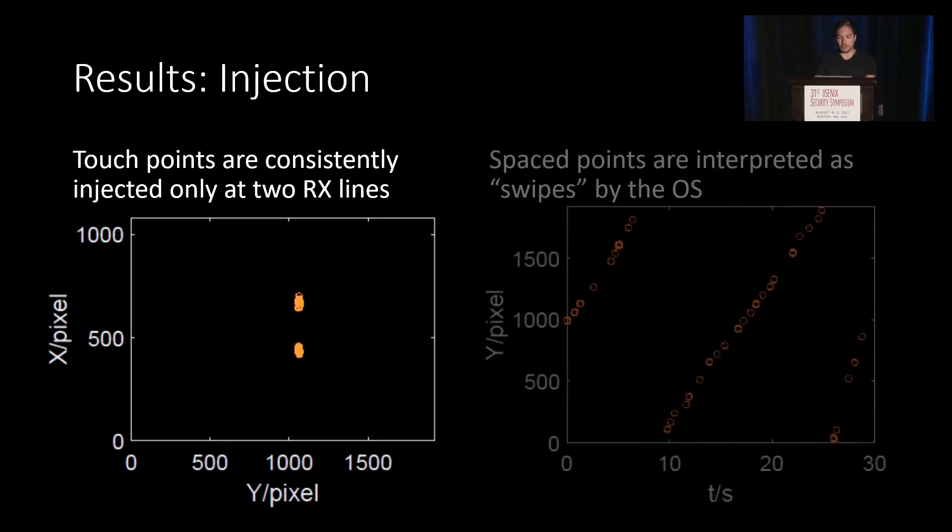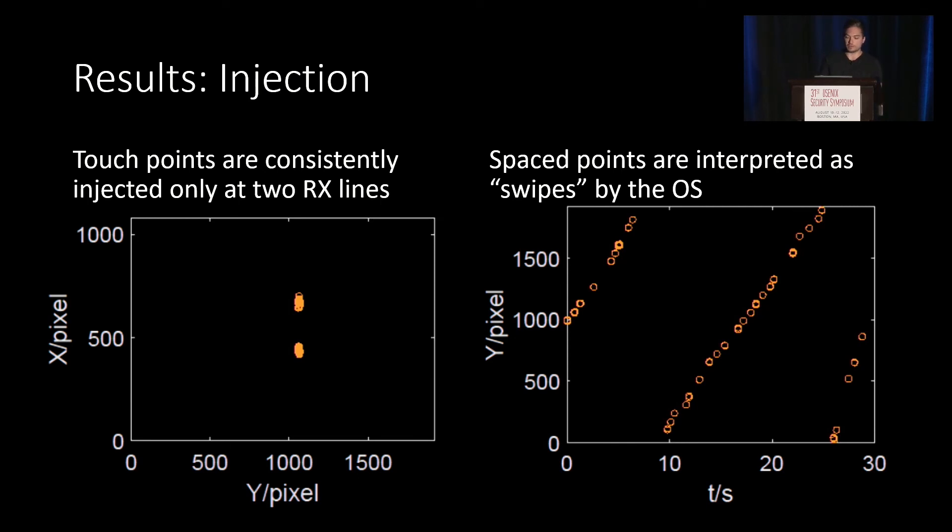And we are also able to inject swipes into the phone, swipes up and down, by tweaking the injection frequency a bit, a bit higher than 120 Hz, or a bit lower than 120 Hz, because there are distinctive touch points injected, but two distinct touch points in the aerial and timely vicinity to each other will be interpreted by the OS as a swipe up or down.